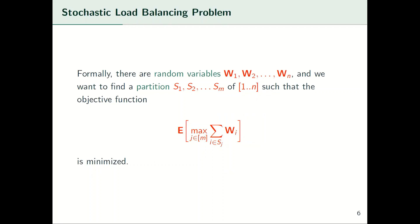We now define the stochastic load balancing problem formally. Throughout this talk we use bold symbols indicating random variables. As input we have n random variables which we show as w_i's. We want to partition them into m sets S_j's such that the expected maximum over the sum of jobs in S_j's is minimized.